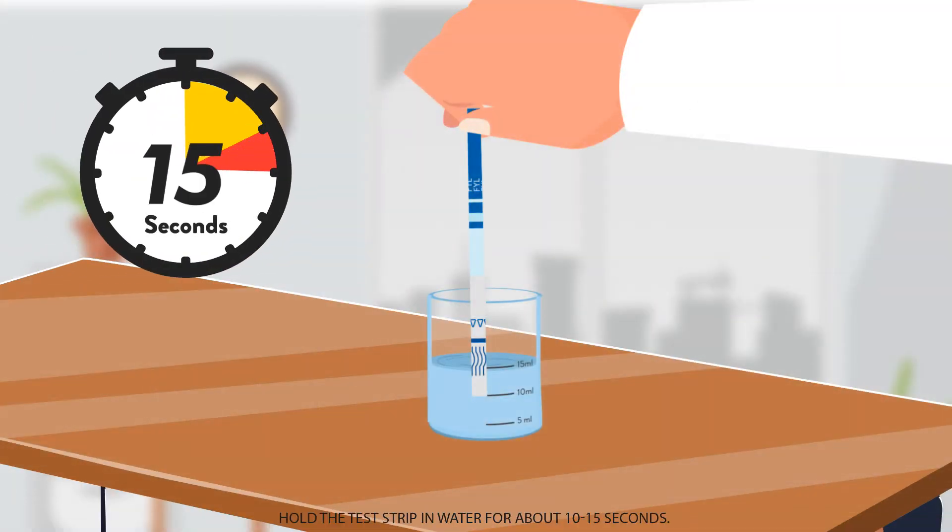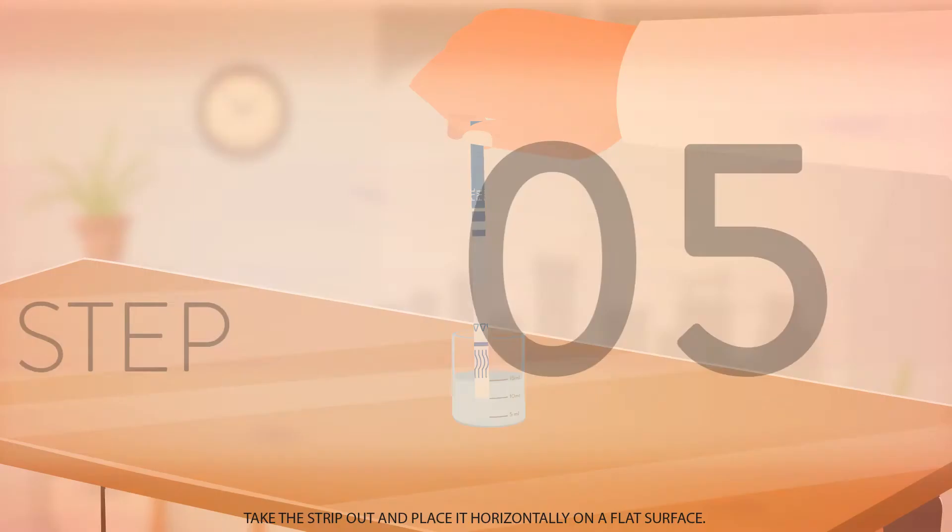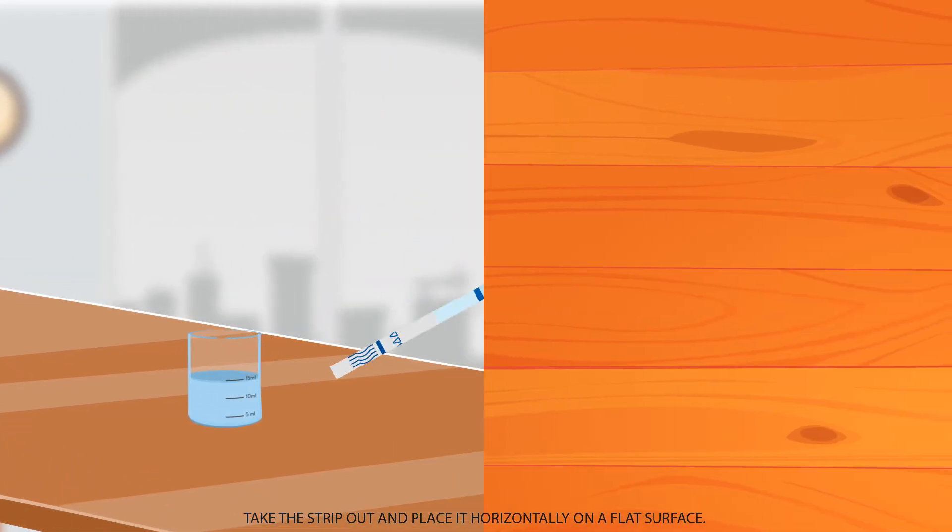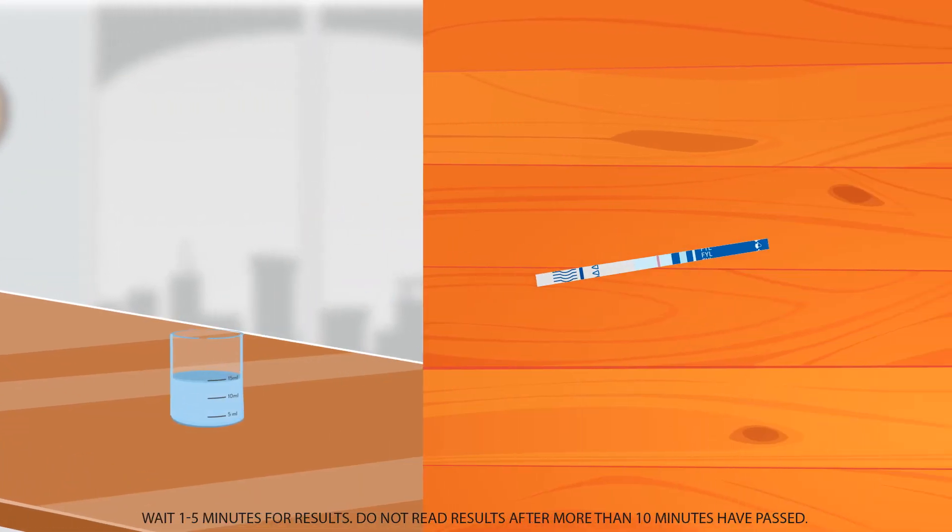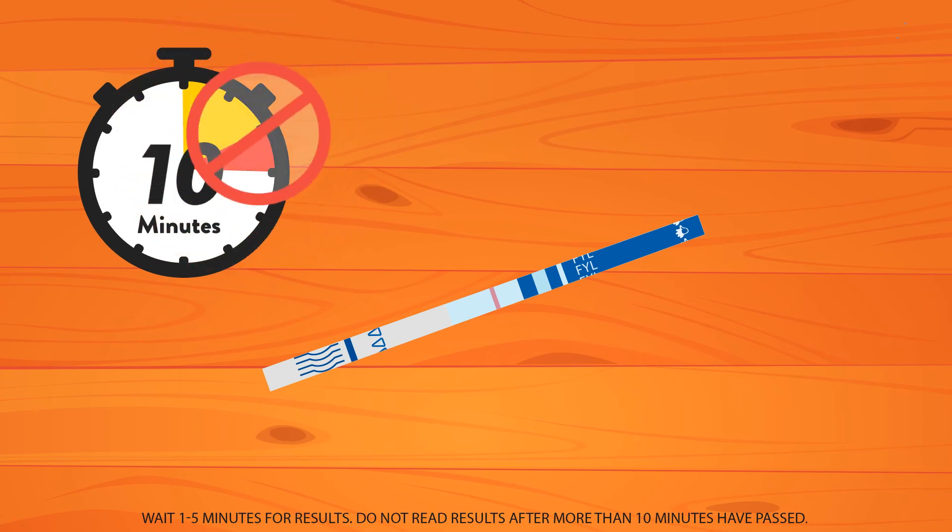Step 4. Hold the test strip in water for about 10 to 15 seconds. Step 5. Take the strip out and place it horizontally on a flat surface. Wait 1 to 5 minutes for results. Do not read results after more than 10 minutes have passed.